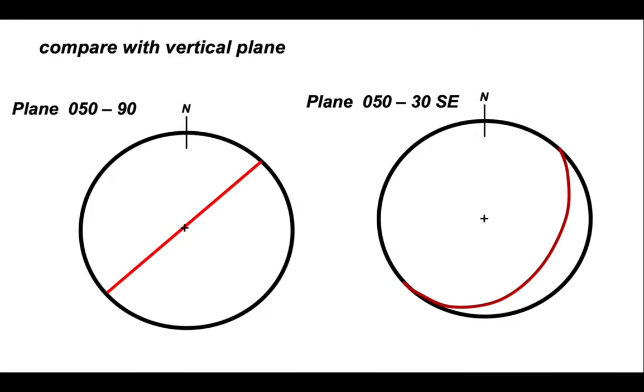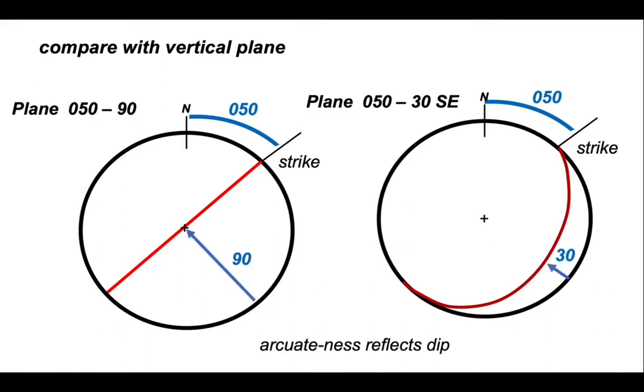Let's compare our two cuts. The vertical plane on the left and the inclined plane on the right. They both have the same strike but they have different dips. So the arcuateness of our great circle is representative of the dip. The more arcuate is the shallower the dip. Very straight curves that go straight through the middle of the plot represent vertical planes.